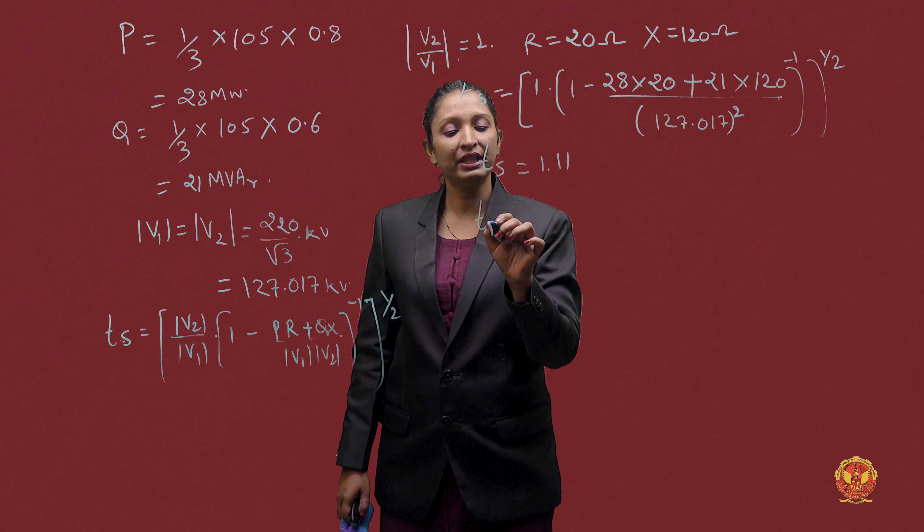This is a straightforward problem. We were given the MVA rating and impedance, which gives us R and X values. Since it is a 3-phase system, we calculated the per-phase real power and reactive power. Using the tap-setting relation derived previously, we found both tap settings: Ts equals 1.11 and Tr equals 0.9.